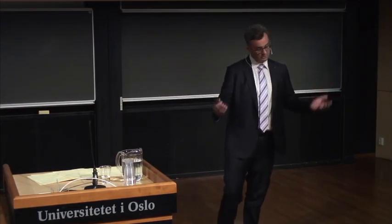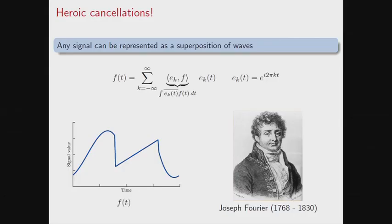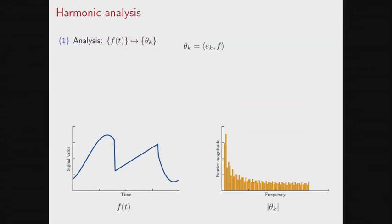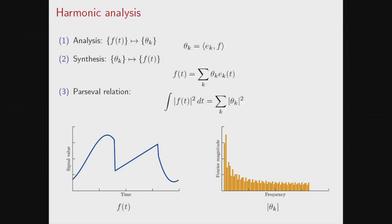The way we represent this is by computing correlation coefficients between the signal of interest and a plane wave — that's a coefficient — then putting this coefficient in front of the wave and expanding, just like in an orthonormal basis. The reason is that plane waves form an orthonormal basis. That's the principle of harmonic analysis — we have these heroic cancellations.